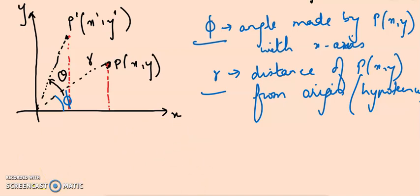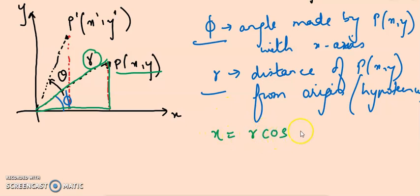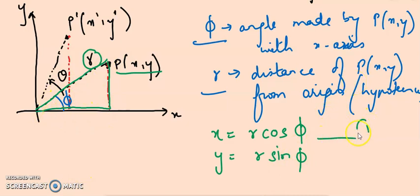With these basic assumptions, looking at the triangle for point P(x, y): I know r, I know phi. Using basic trigonometry I can write x = r·cos(phi) — this is equation one — and y = r·sin(phi) — this is equation two.